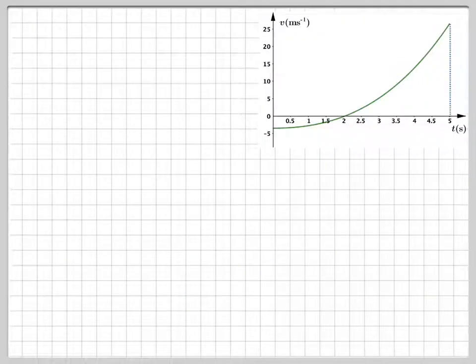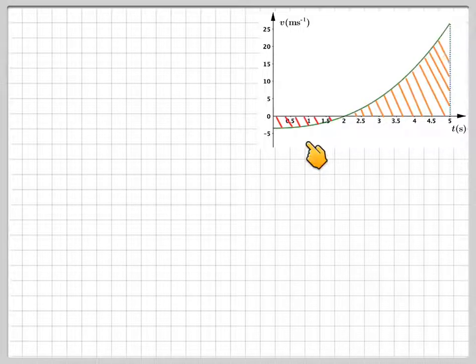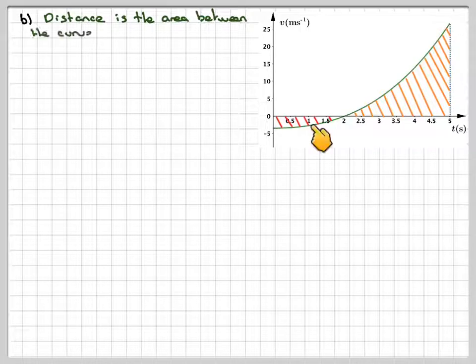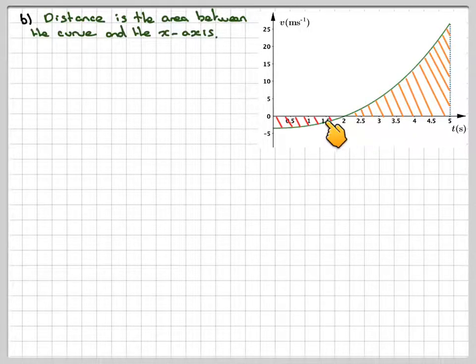Now we need to find the total distance travelled. The area between the curve and the x-axis gives me the distance. But the problem is here, this bit here, the red bit here is negative and this is positive.